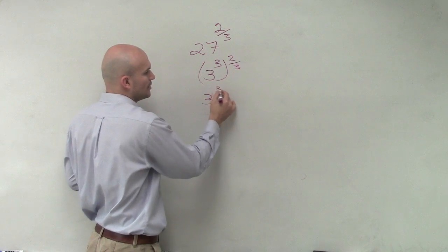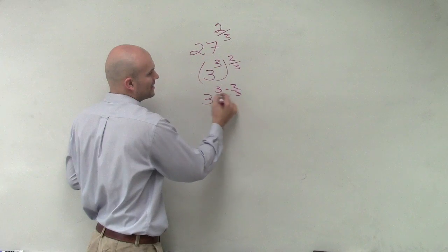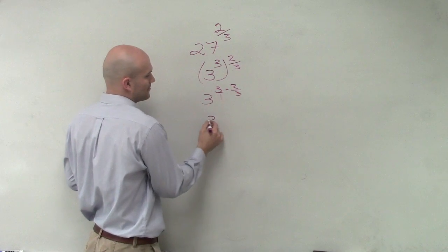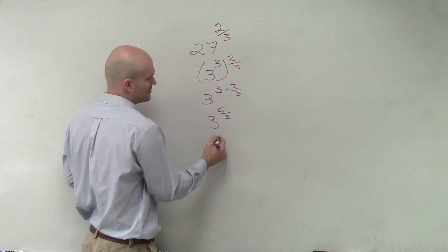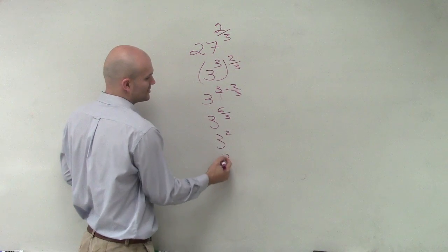Therefore, by using the power of power rule, 3 times 2 over 3, which gives you 3 to the 6 over 3, which gives you 3 to the second power, which gives you 9.